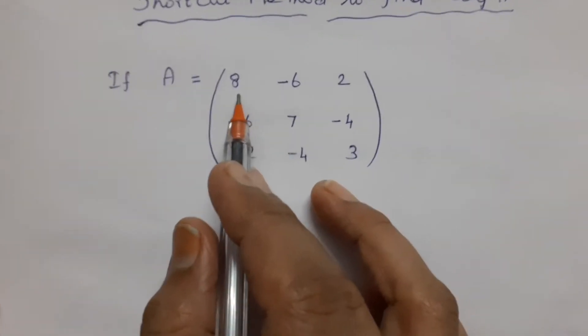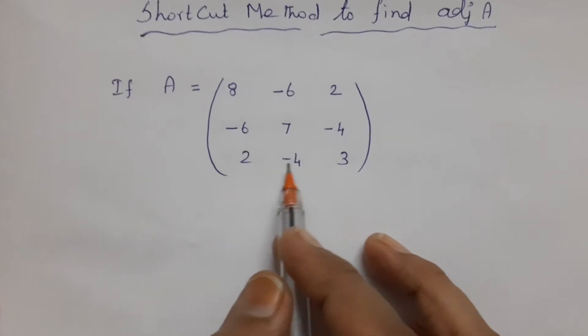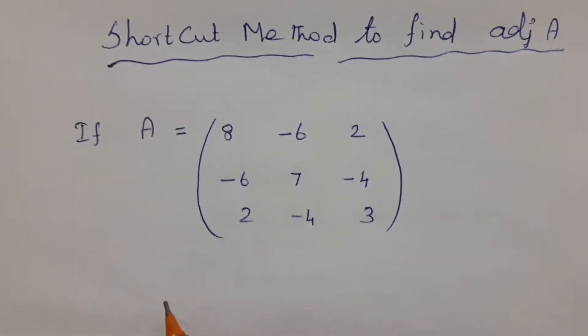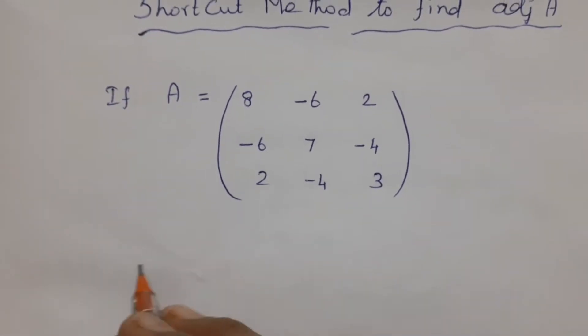Consider a matrix A: 8, -6, 2; -6, 7, -4; 2, -4, 3. Consider this 3 by 3 matrix. Now let us find the adjoint of this matrix using the shortcut method.